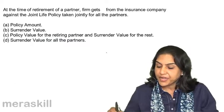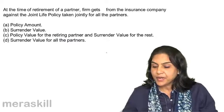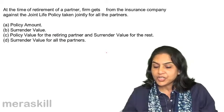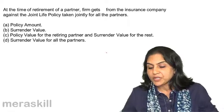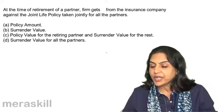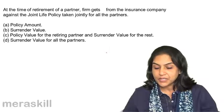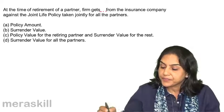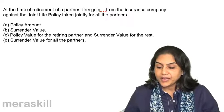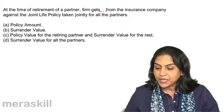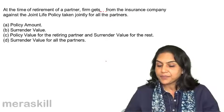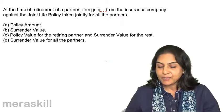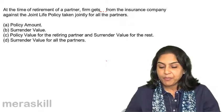At the time of retirement of a partner, the firm gets from the insurance company against the joint life policy taken jointly for all the partners. What does the firm get? A: Policy amount.